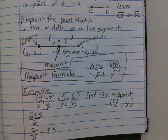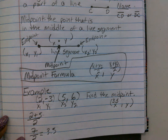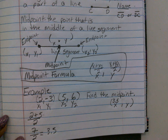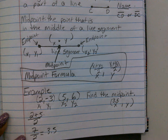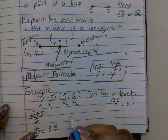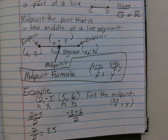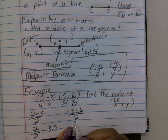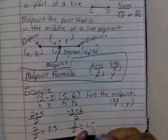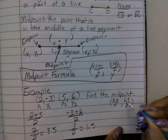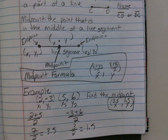So first you label: x₁, y₁ is the first endpoint; x₂, y₂ is the second endpoint. To find the x-value for the midpoint, add the x's together and divide by two: two plus five divided by two. Two plus five is seven, and seven divided by two is 3.5. So 3.5 is the x-coordinate for the midpoint. Now let's find the y-coordinate. That's negative three plus six divided by two. Negative three plus six is three, divided by two is 1.5. So your midpoint is (3.5, 1.5).